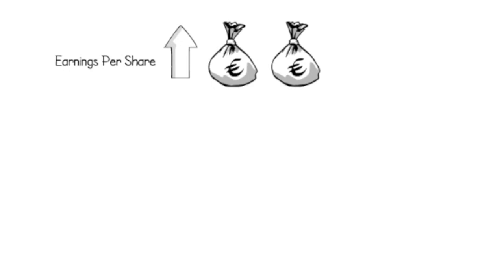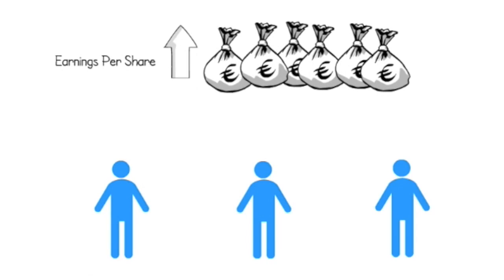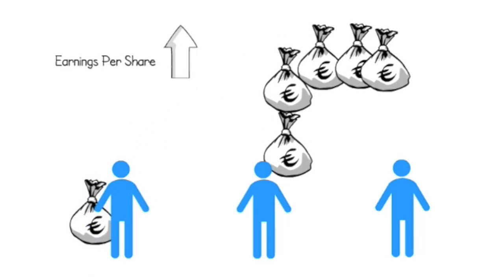The earnings per share ratio quite simply tells us the amount of profit after tax, less preference dividends per ordinary share. If the earnings per share ratio is higher, this is an indicator that profitability has improved, and an investor would be more confident knowing that he or she may expect a higher dividend.